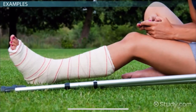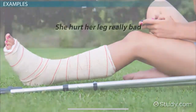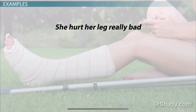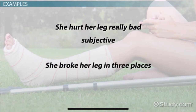Here are a few more examples of how to make a subjective statement more objective. 'She hurt her leg really bad.' Subjective, because it is not supported or proven, and the use of 'really' makes it sound exaggerated. It can be changed to 'she broke her leg in three places.' Objective, because it provides facts, and the audience can deduce that she must be in a lot of pain.